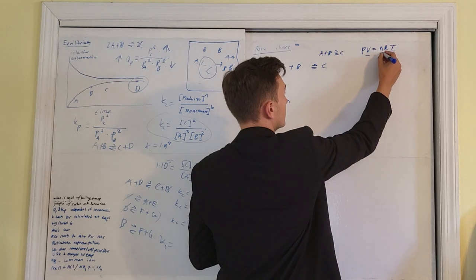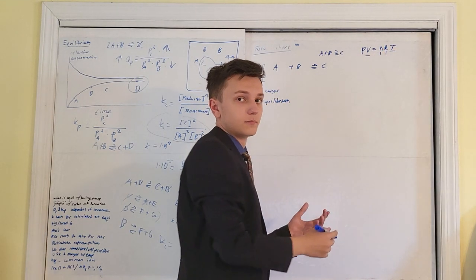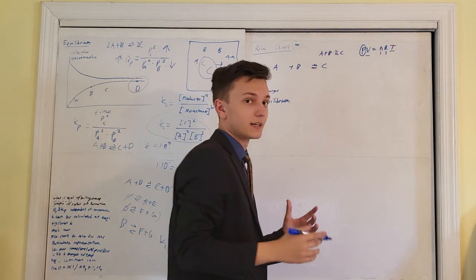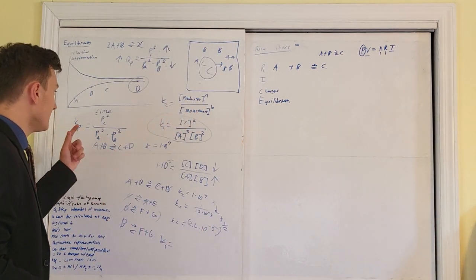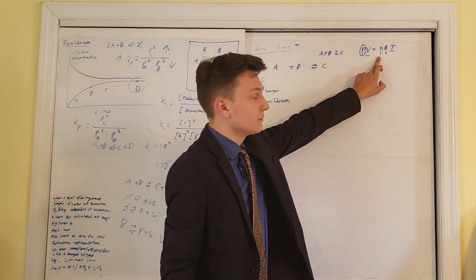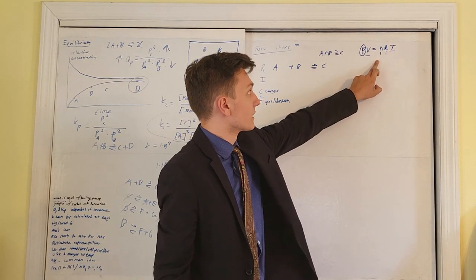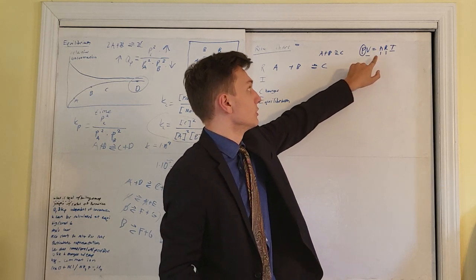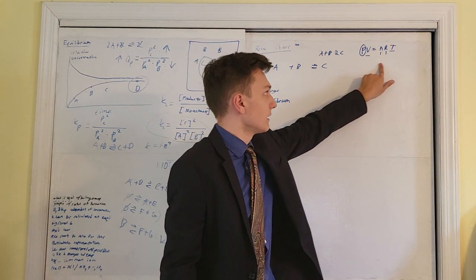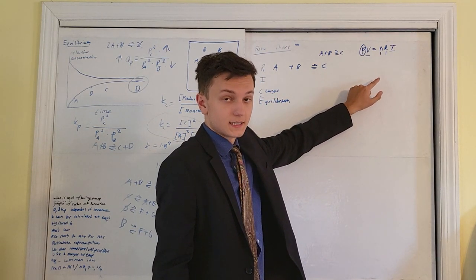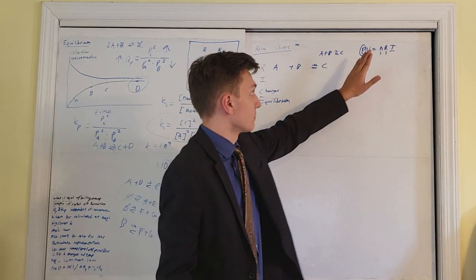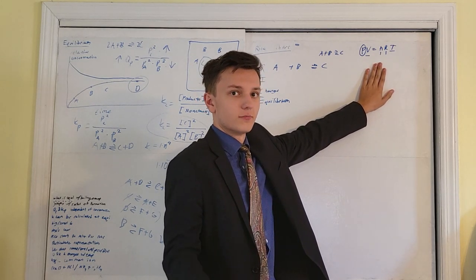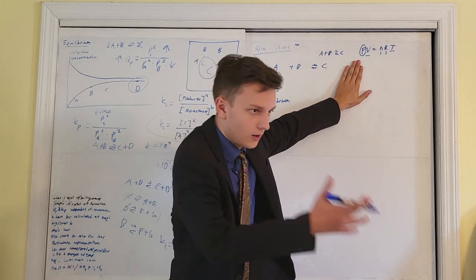Your goal is to solve for either concentration or partial pressure depending on whether the problem gives you Kc or Kp. For example: partial pressure of A is 1.2, partial pressure of B is 2.1, and we start with 0 of C since we're just starting with reactants and trying to form C.